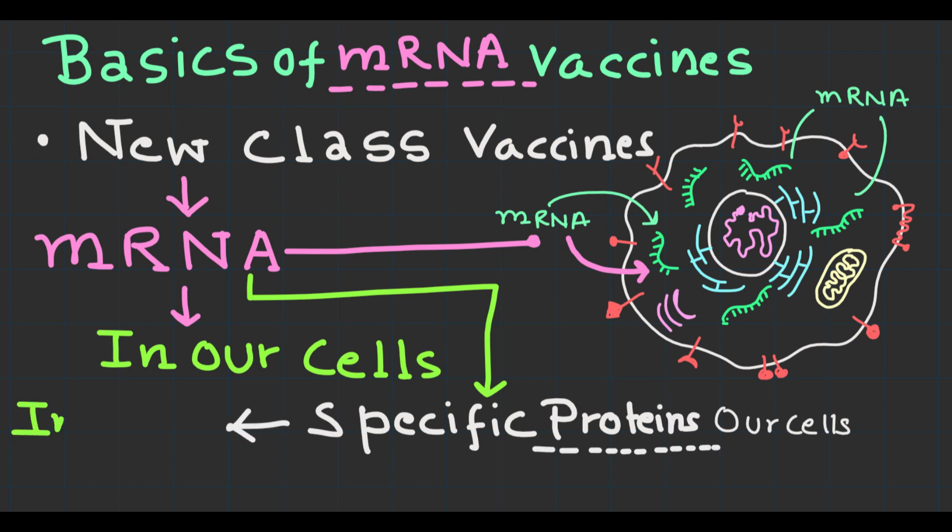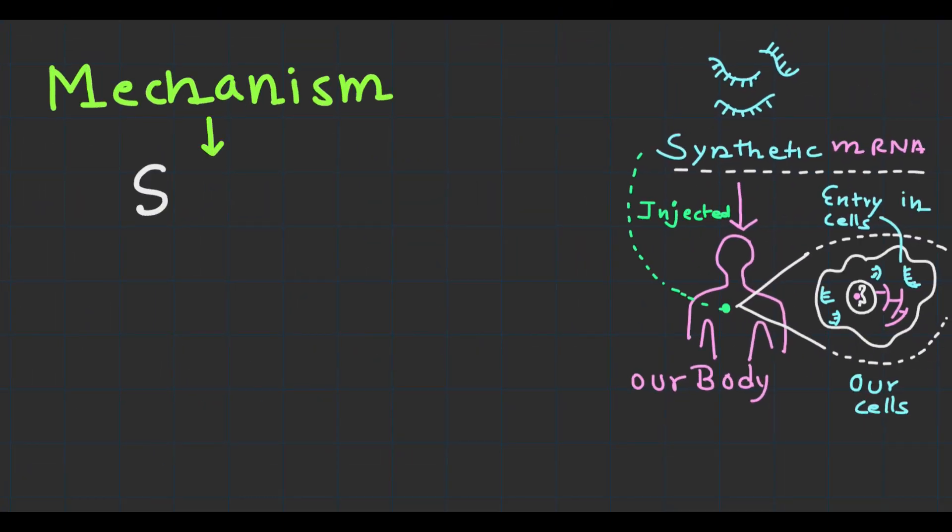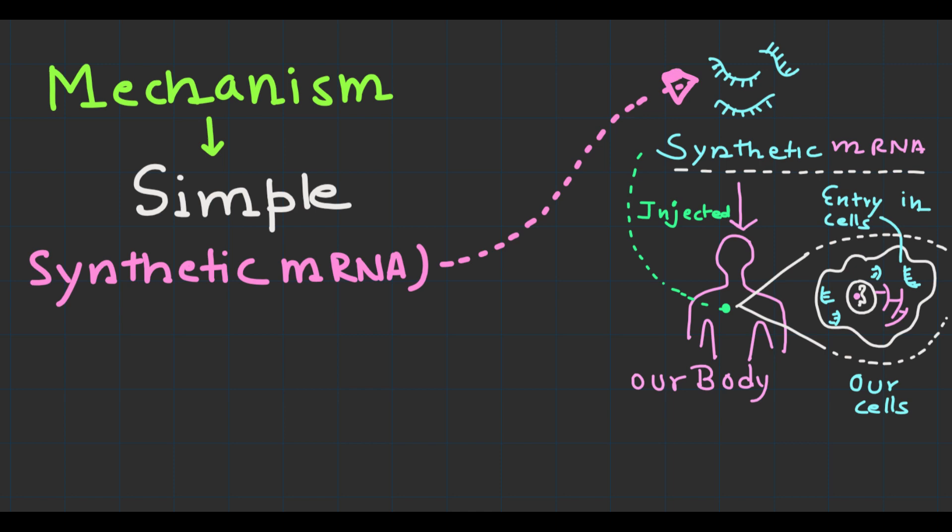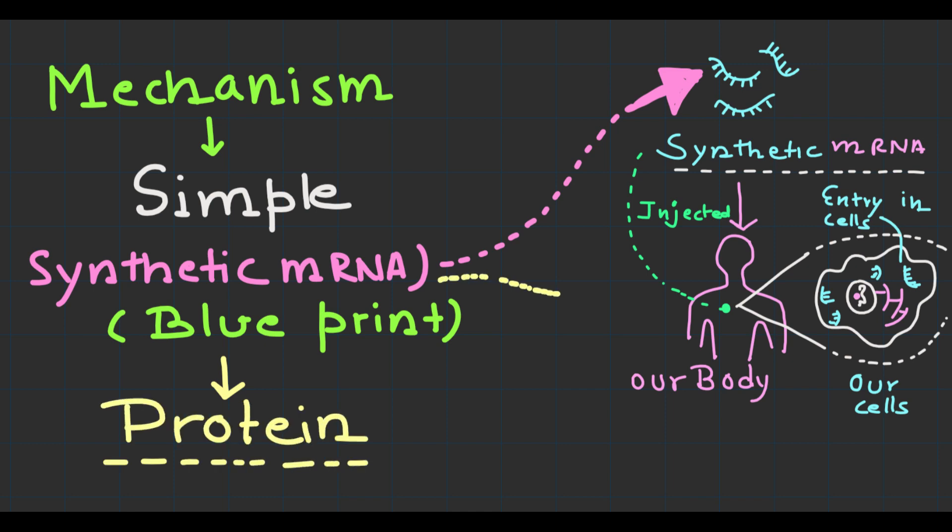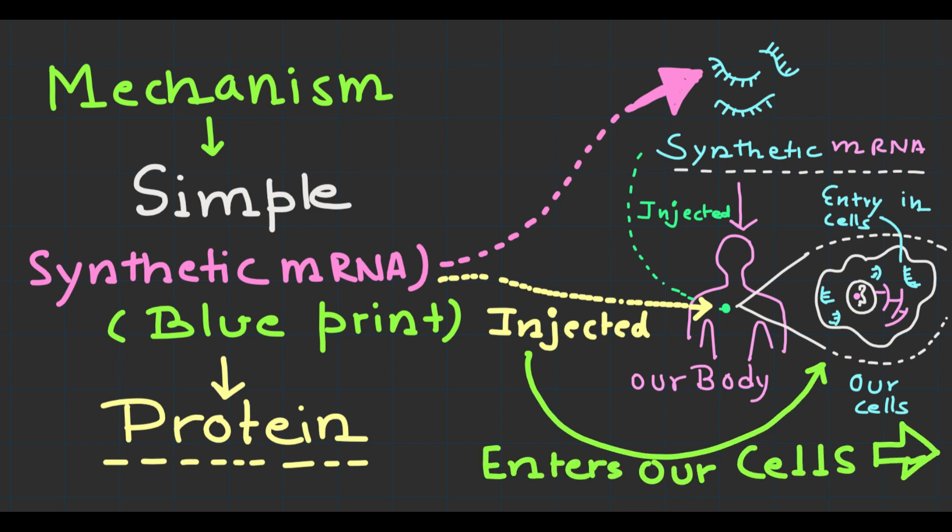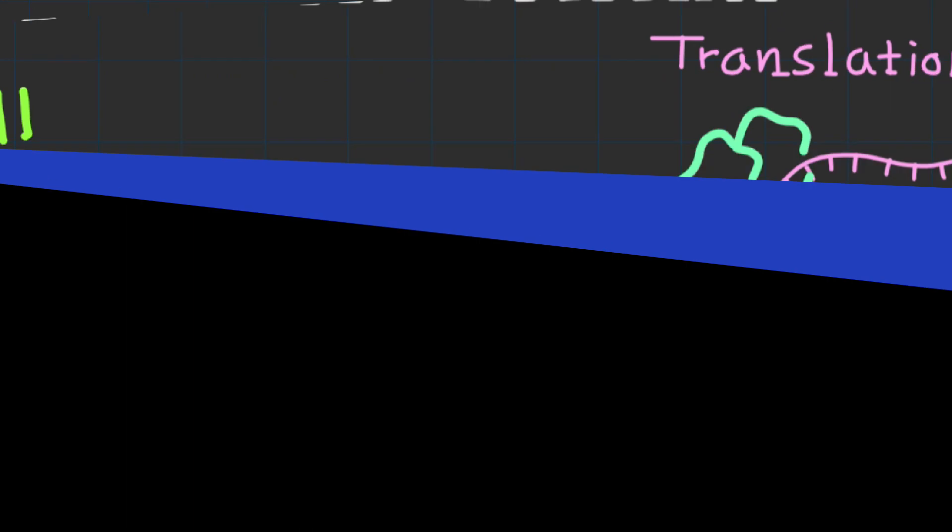Now let's understand how mRNA vaccines work. The mechanism of action of mRNA vaccines is elegant in its simplicity. The vaccine contains a small piece of synthetic mRNA molecule that encodes the blueprint of a viral or bacterial protein. Once injected into the body, the mRNA enters our cells.